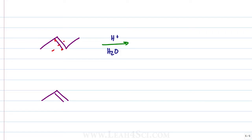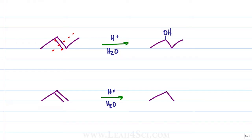In the case of a symmetrical alkene, it doesn't matter where I put the alcohol because it'll be the same. If I have the same reaction with an asymmetrical alkene, it's going to follow Markovnikov's rule where the hydrogen adds to the less substituted carbon, and the carbocation and ultimately the nucleophile will happen on the more substituted carbon, giving us in this case 2-propanol.